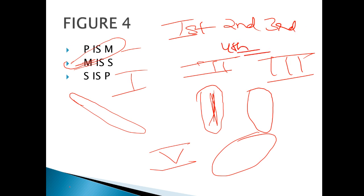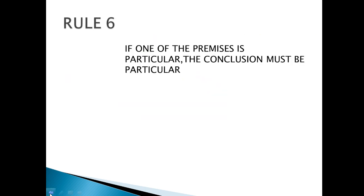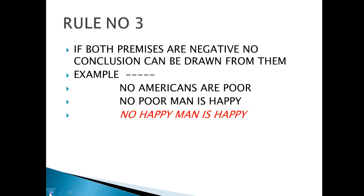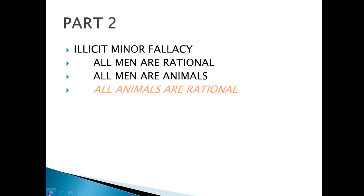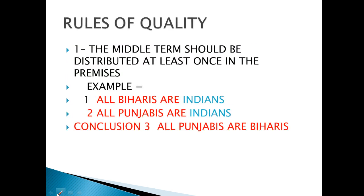I hope aap sab ab samajh gaye hain ke figures kya hoti hain, kaise humne dekhna hai ke koi figure first, second, third ya fourth figure hai. So I hope guys aapko yeh clear ho gaya hai. Ab hum chalenge rules par — 5 rules hote hain, is ko hum discuss karenge one by one.